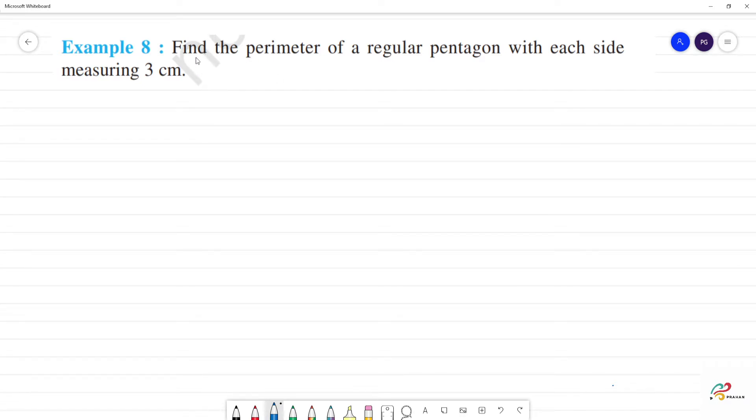Example 8: Find the perimeter of a regular pentagon with each side measuring 3 cm. Pentagon - a pentagon has 5 sides.